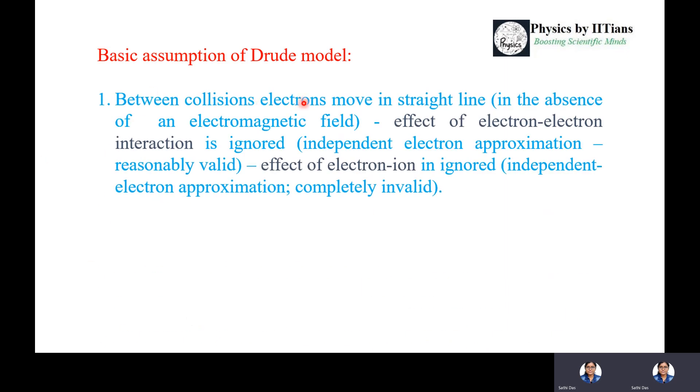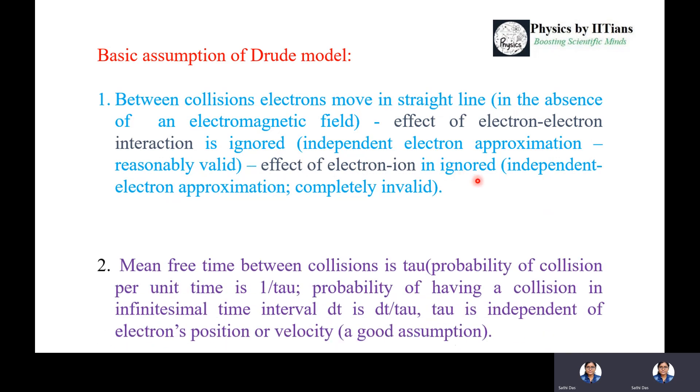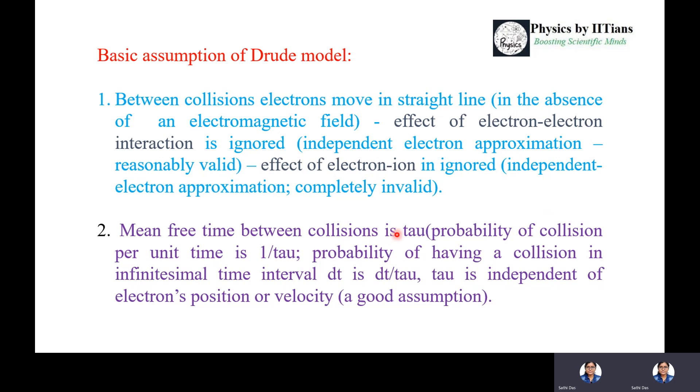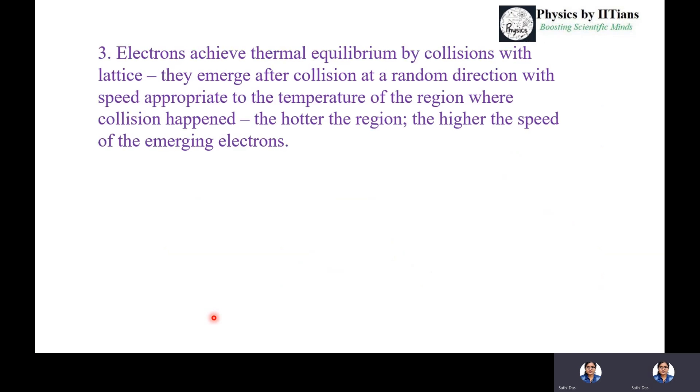The basic assumptions of Drude are: between collisions, electrons move in straight lines when there is no external electromagnetic field. The effect of electron-electron interaction is ignored, and electron-ion interaction is also ignored. The mean free time between collisions is tau, then the probability of collision per unit time is 1/tau. The probability of having collision in infinitesimal time interval dt is dt/tau, where tau is independent of electron position or velocity.